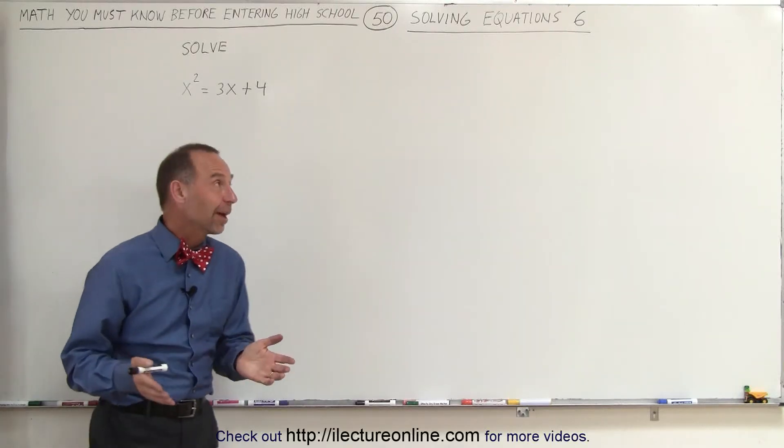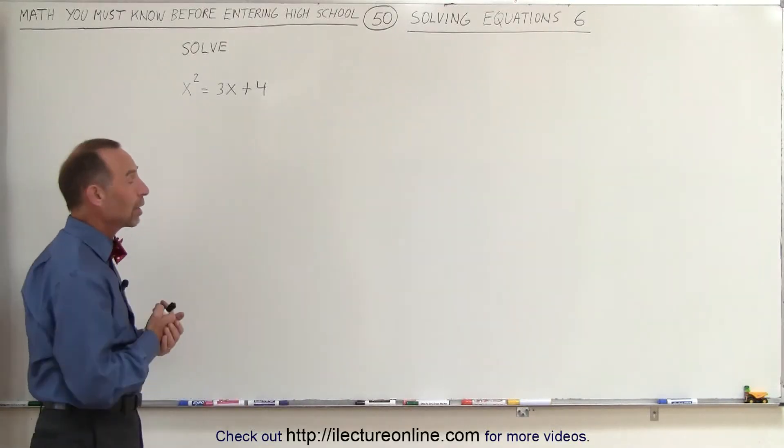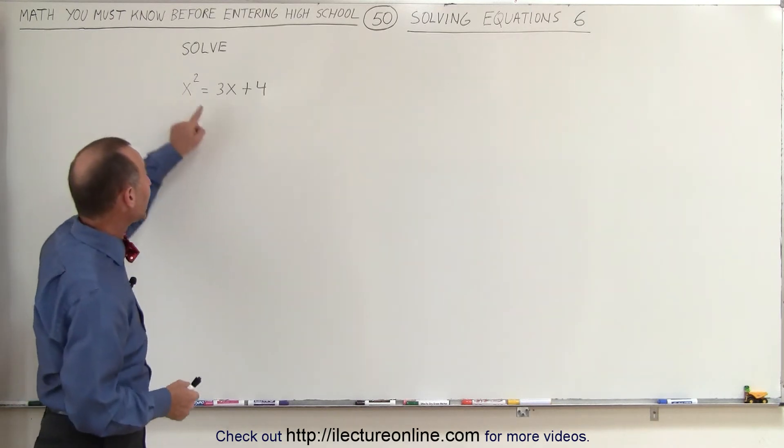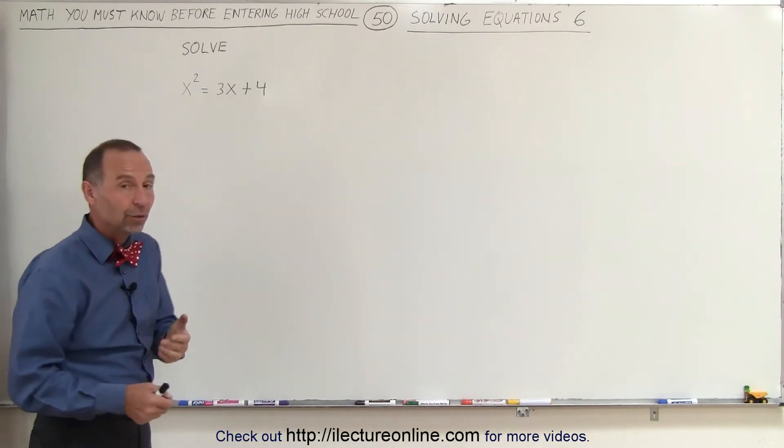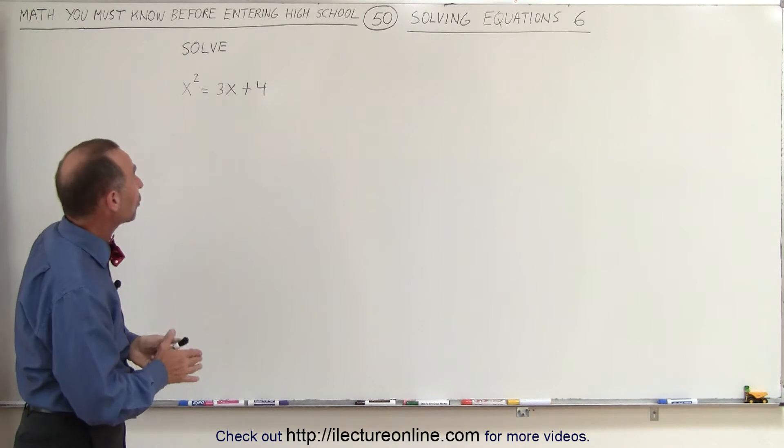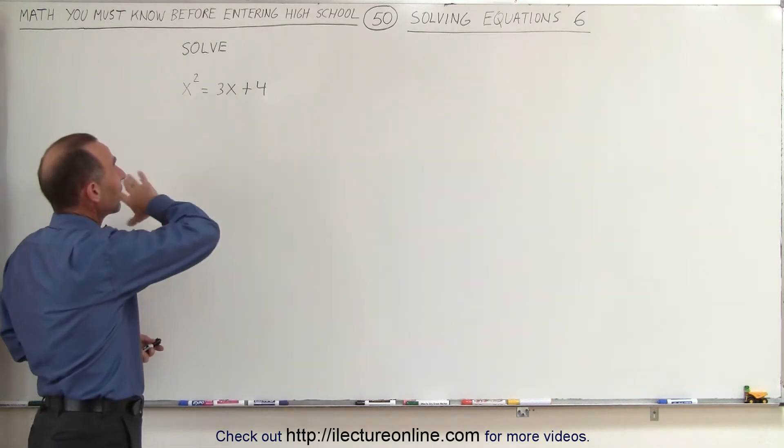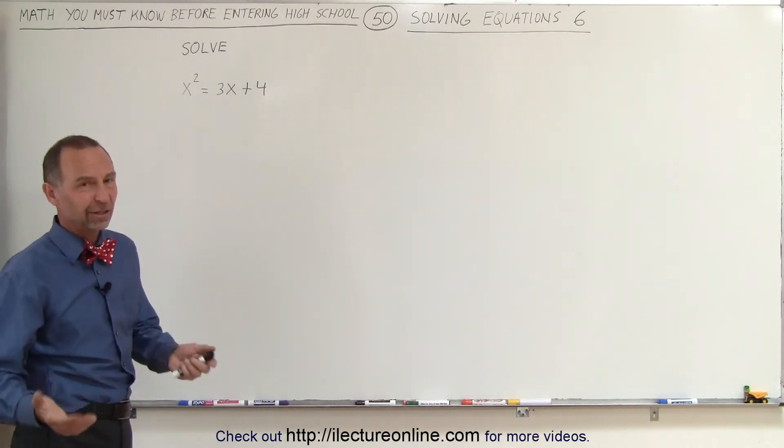Welcome to Electron Line. Our next example, again, is a quadratic equation. Notice that we have the x-squared term here, and with quadratic equations, what we like to do is move all the terms to the left side and a zero on the right side. So let's go ahead and do that.